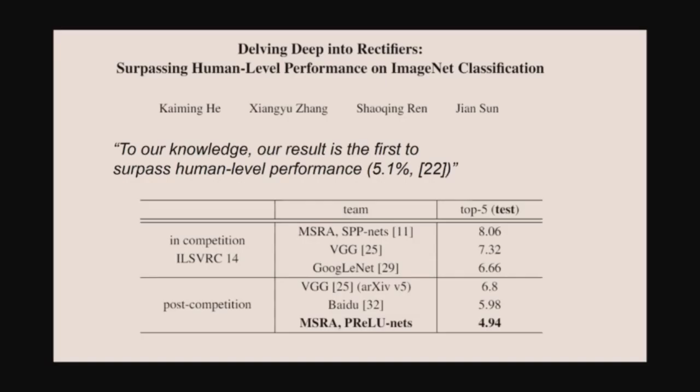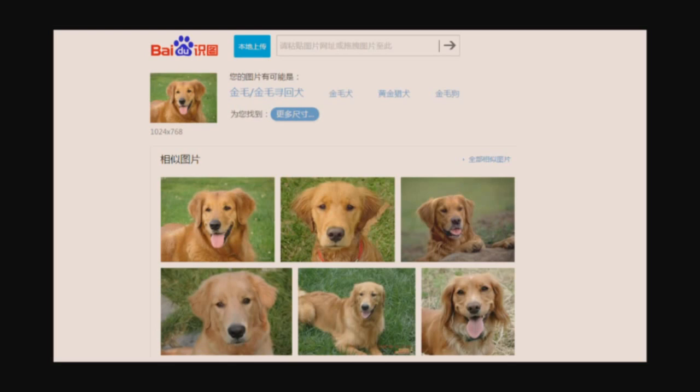By 2015, a group from China and Microsoft Research had demonstrated the ability to recognize arbitrary photos more accurately than humans could. It was really in that 2012 to 2015 period that things suddenly took off, particularly in computer vision and academia.